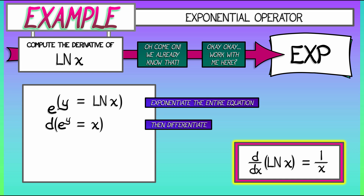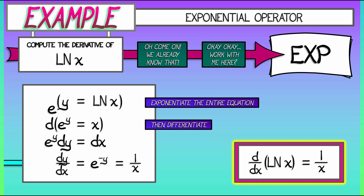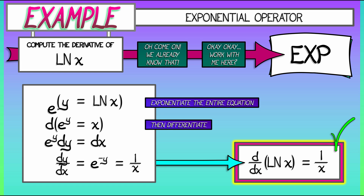On the left, we get e to the y dy. On the right, we get dx. We can manipulate that, solve for dy/dx, and we get e to the minus y. But e to the y is x, and so we see our final answer: the derivative of log is 1 over x.